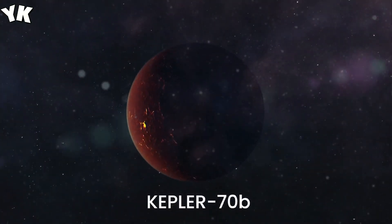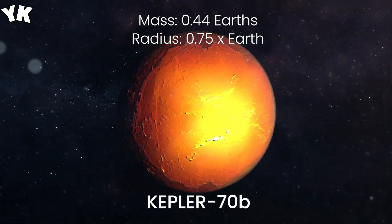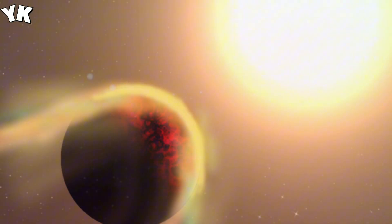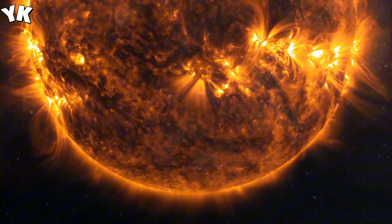Kepler-70B, the scorching giant. Now, we're off to the constellation Cygnus to witness Kepler-70B, one of the hottest exoplanets. It's incredibly close to its star, reaching scorching temperatures of 6,650 degrees Celsius, hotter than our Sun. It's a true inferno.